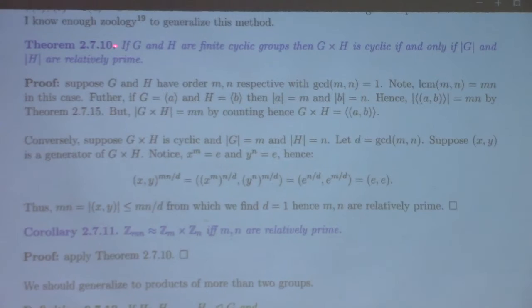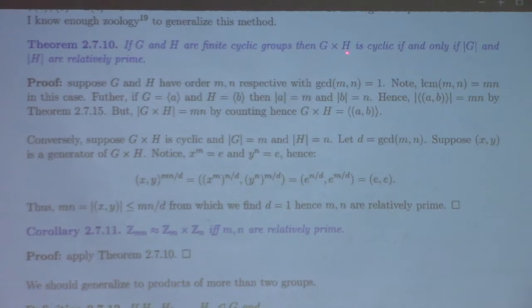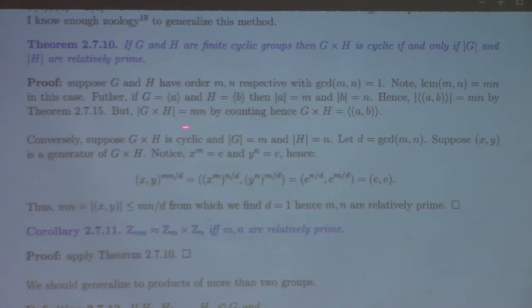Here's the theorem: if G and H are finite cyclic groups, then the direct product of G and H is cyclic if and only if their orders are relatively prime. This result is amazing, and the proof is not that hard. Basically, if you assume relatively prime orders, you can prove that the tuple of their generators has order MN, and consequently the group G cross H is cyclic.